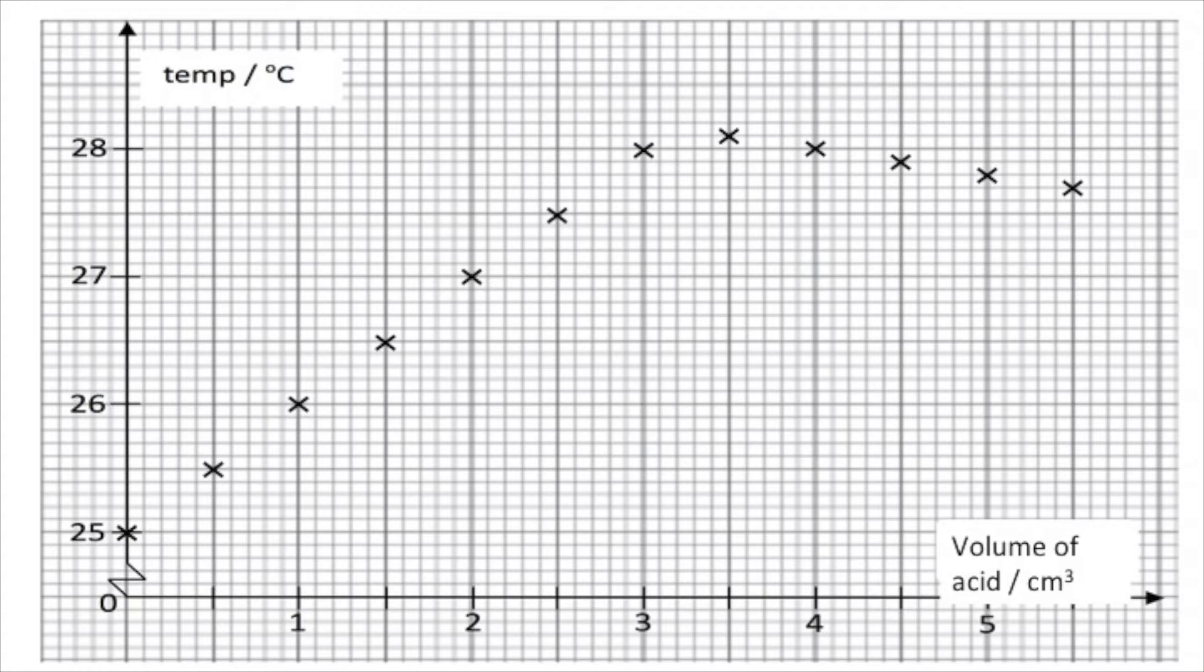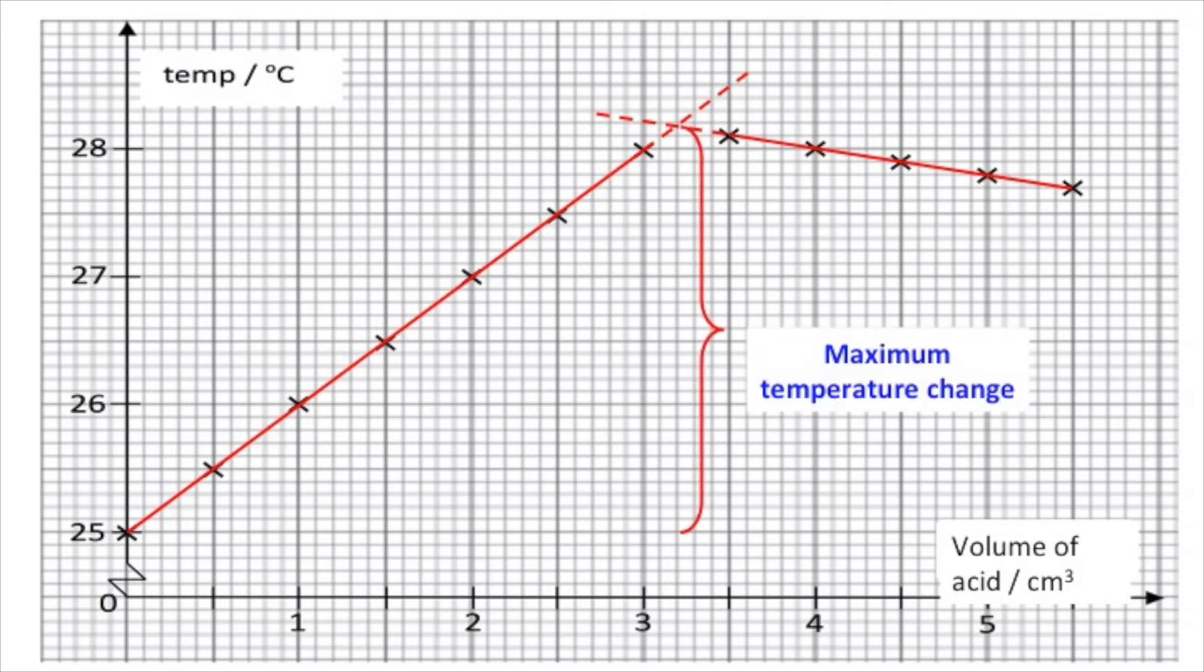So once again, we mark the data on the graph paper and connect them with red line. Then we extend the chain or extend the line by using dotted lines and find the intersection. Here shows. Because our experiment starts from 25 degrees, so here shows the maximum temperature change.